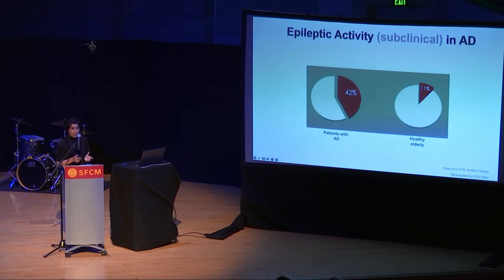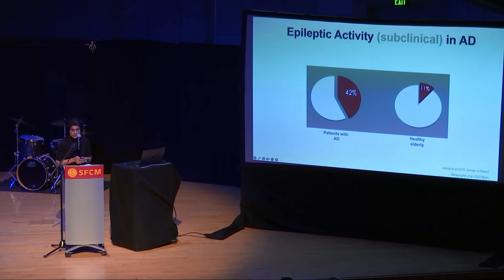Not only that, patients who do have these conditions progress much faster in their clinical decline compared to those who don't. So in summary, I've been telling you all about brain rhythms and how they go out of tune in conditions like Alzheimer's disease.